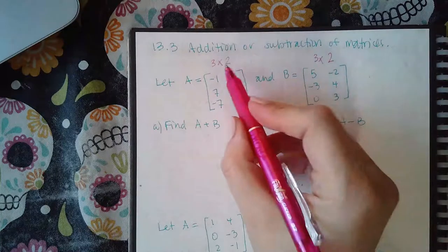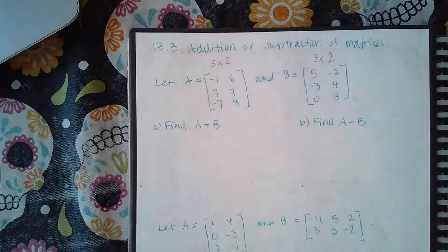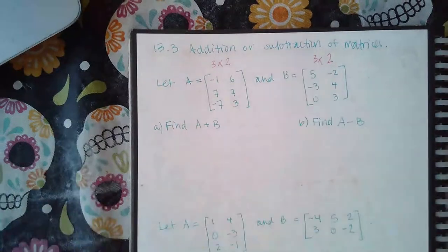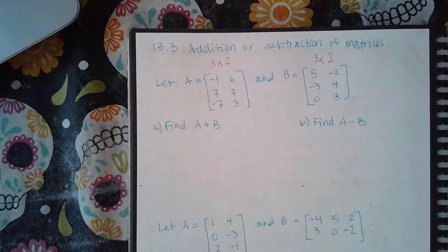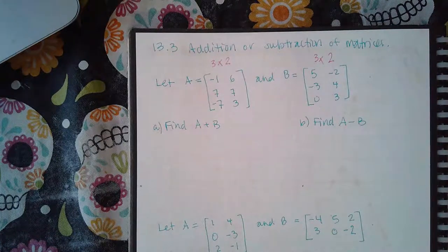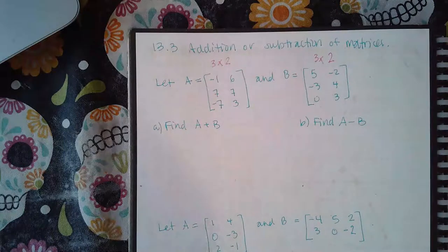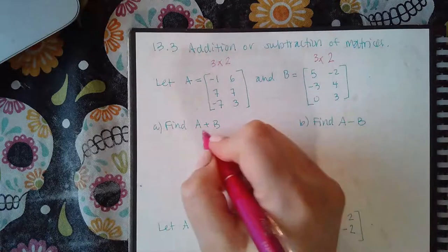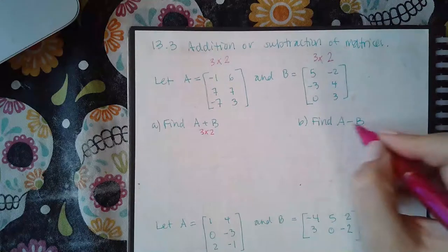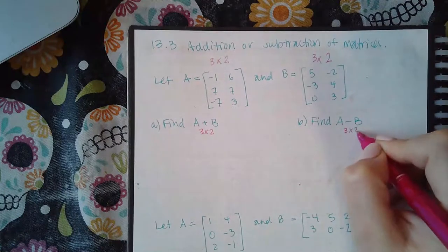And you'll notice that the dimensions are exactly the same. This one's a three by two, and that one's a three by two. Not only do they have to have the same dimensions, but your answer will have the same dimensions. So, A plus B will be a three by two, and A minus B will be a three by two.